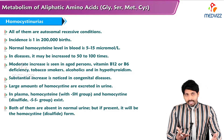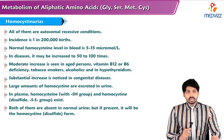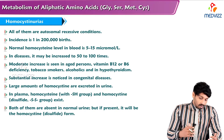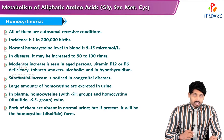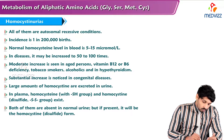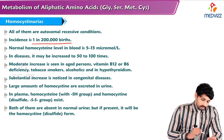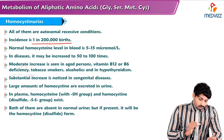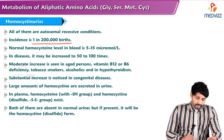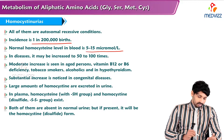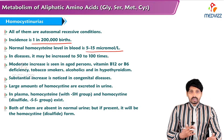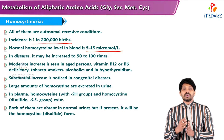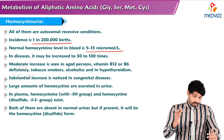Different types of homocystinuria exist, and all of them are autosomal recessive in condition. Incidence is one in two lakh births. Normal homocysteine level in blood is 5 to 15 micromoles per liter. In disease conditions, it may be increased to 50 to 100 times of its normal level.